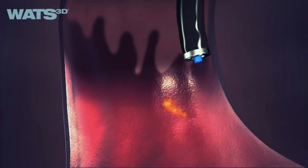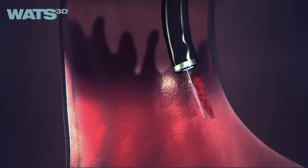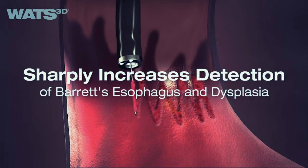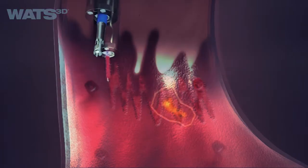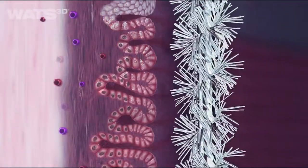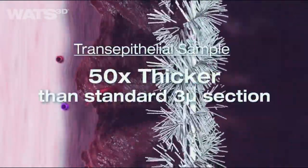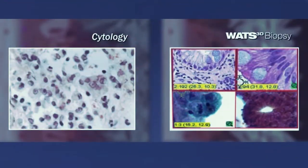WOTS 3D Wide Area Transepithelial Tissue Sampling with Computer Assisted 3D Analysis has been repeatedly shown to sharply increase the detection of Barrett's and dysplasia, often missed by random four-quadrant biopsy. Due to the much greater amount of tissue sampled, the WOTS 3D specimen is 50 times thicker than a standard 3-micron histologic section, providing more critical diagnostic information.